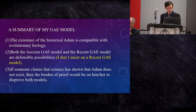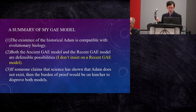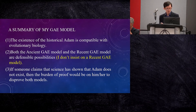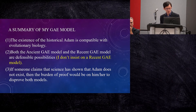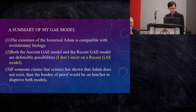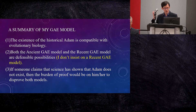In my book, I also argue that both the ancient GAE model and the recent GAE model are defensible possibilities. I don't insist on a recent GAE view — even though in the four views book I'm defending a recent GAE view because I was asked to do so. I myself actually slightly prefer the ancient one. Nevertheless, I do think the recent GAE model is still defensible at this point in time, but I don't insist on it. My own view does not strictly require it, which means that even if the recent GAE model is disproved, it doesn't disprove what I defend in my book.